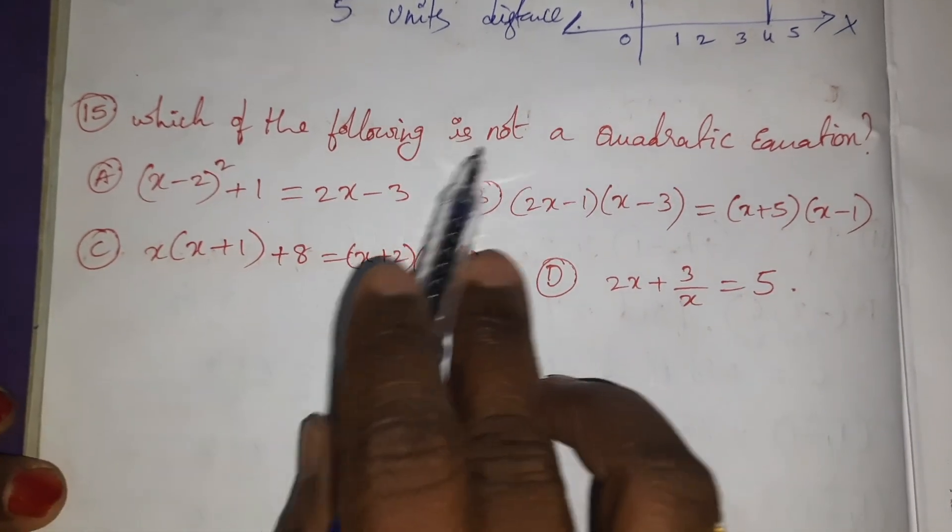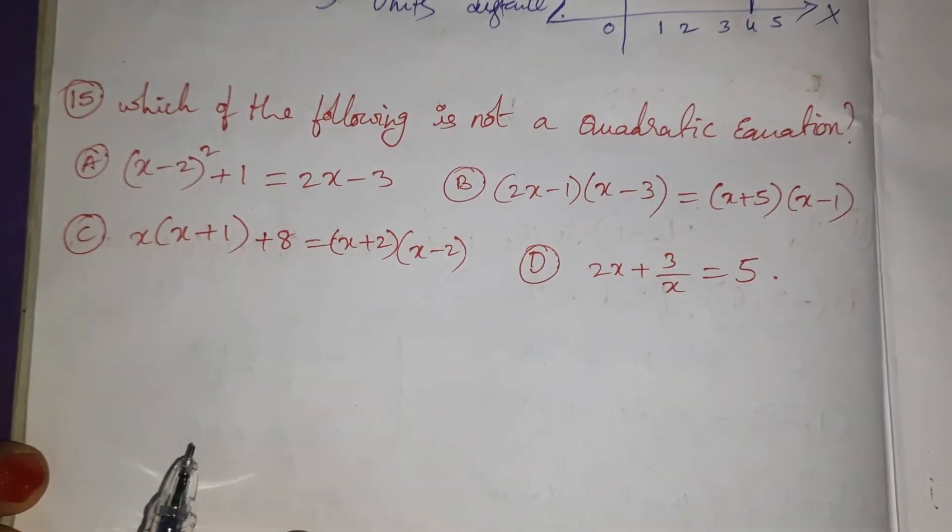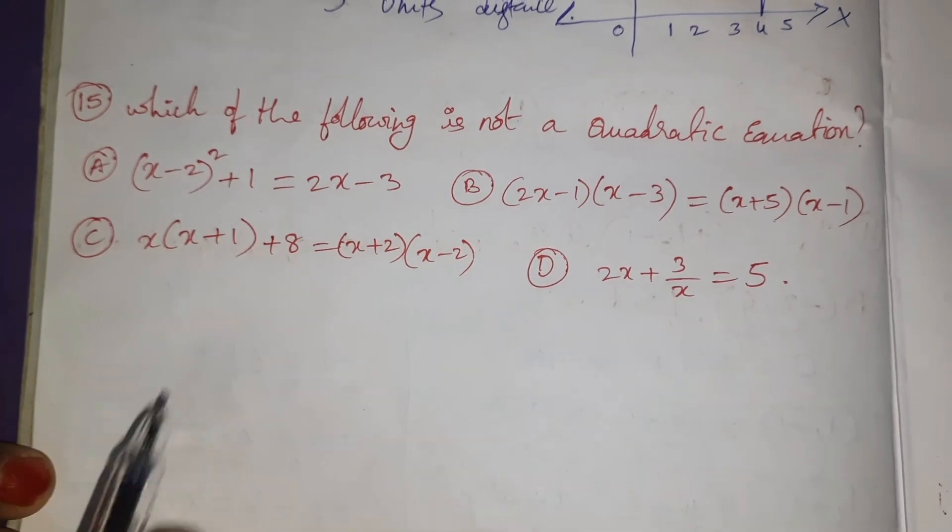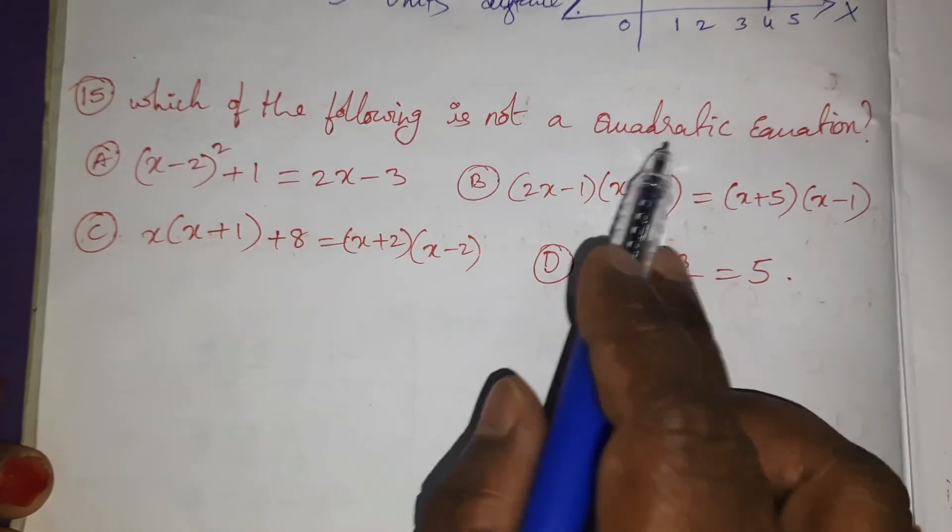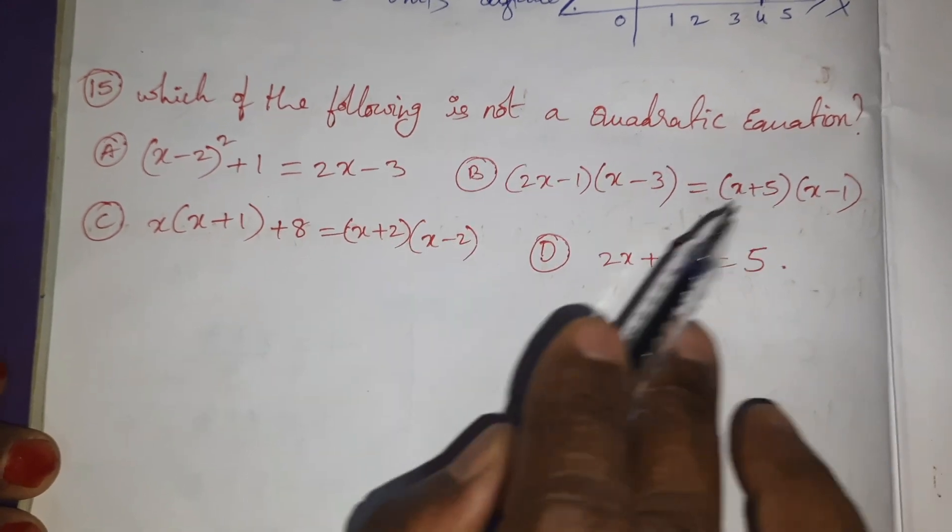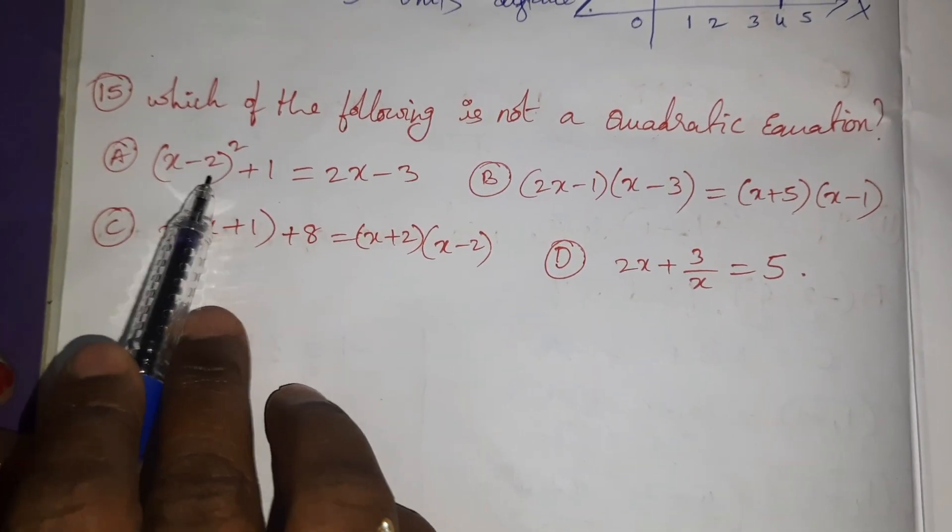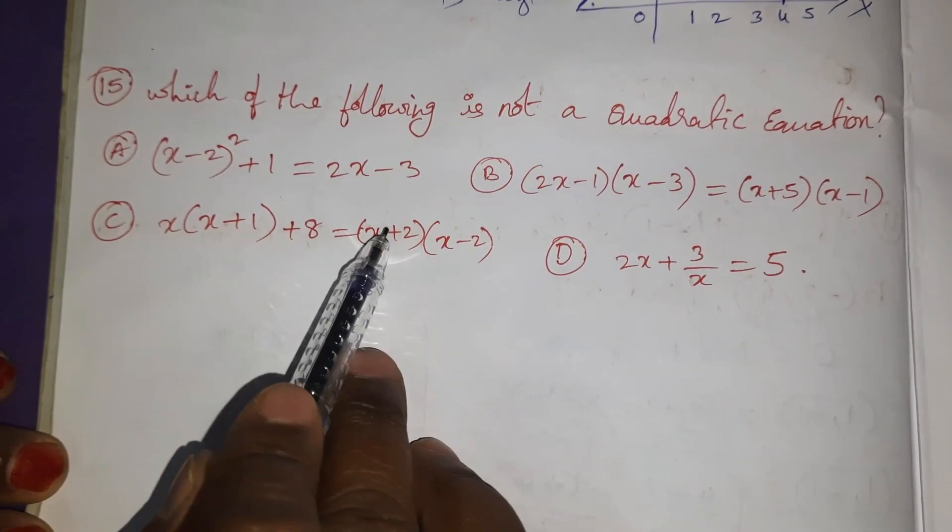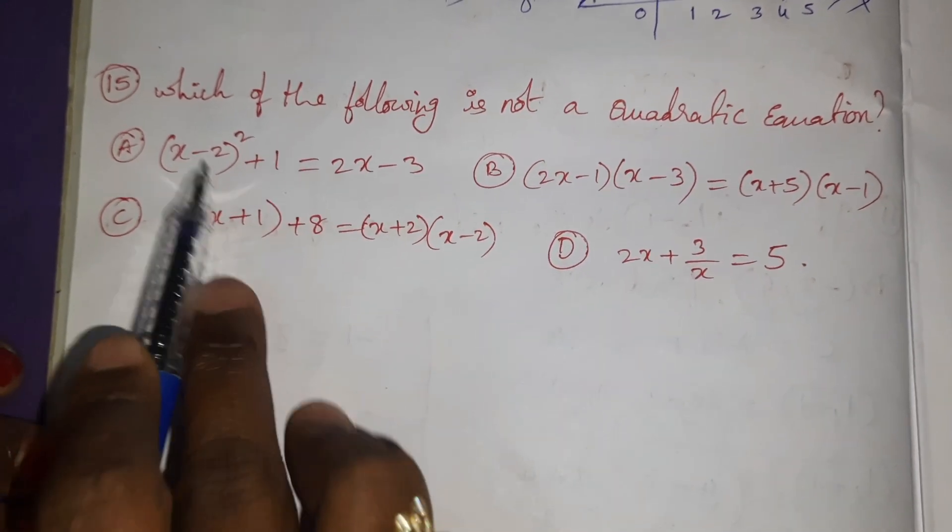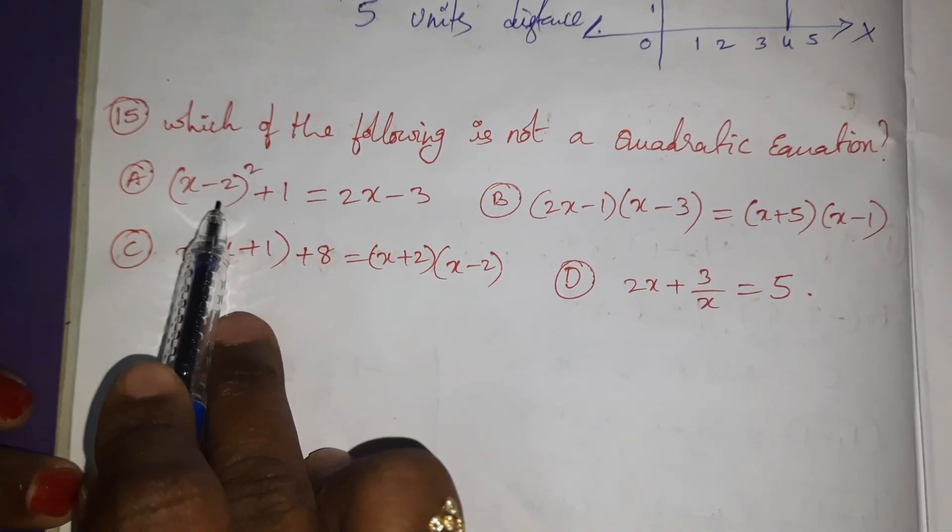Which of the following is not a quadratic equation? Here (x - 2)² + 1 is there. Quadratic equation means degree 2. Not a quadratic means it is not degree 2. Here x² is there, here no x² is there. So it is after simplification will get only x², so it is a quadratic equation.